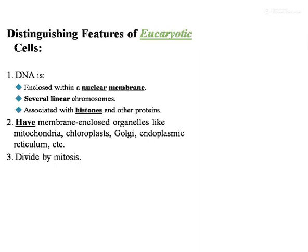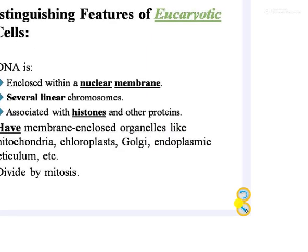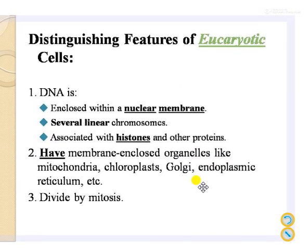In eukaryotic cells, the DNA is enclosed within a nuclear membrane. Several linear chromosomes are present and they are associated with histones and other proteins. Eukaryotic cells have membrane-enclosed organelles like mitochondria, chloroplasts, Golgi complex, and endoplasmic reticulum. These cells divide by mitosis.